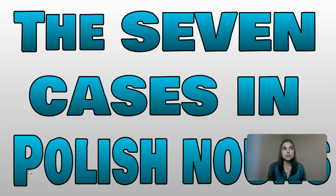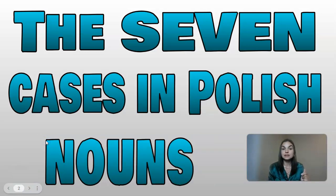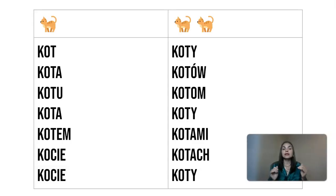That's because that noun has been changed through some kind of case in the Polish language. So let's go through an example of one noun, and in the future I can do other nouns that you might ask for. We're going to start with a very basic noun and look at how it is different depending on the case, in both its singular and plural form. Look at this chart — we have the seven ways to say 'cat' and then the seven ways to say 'cats'.